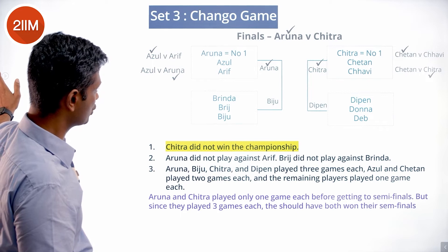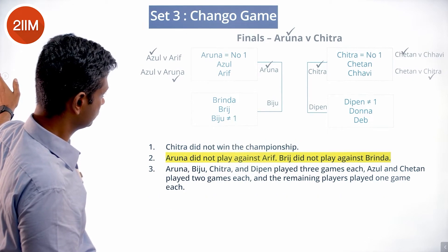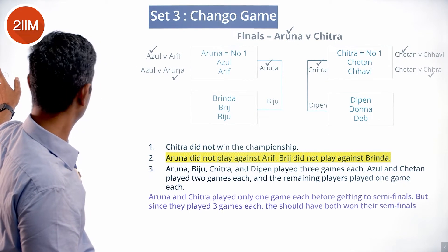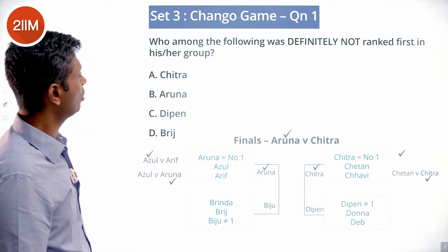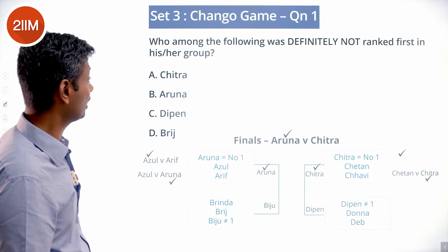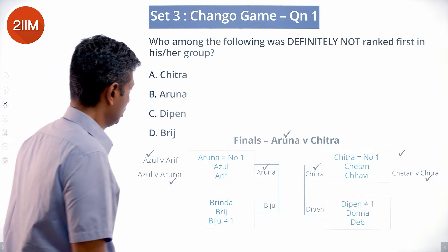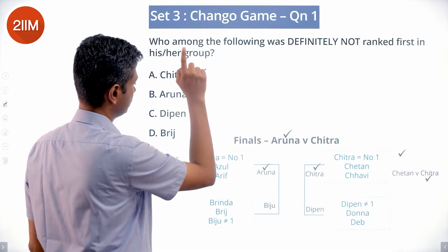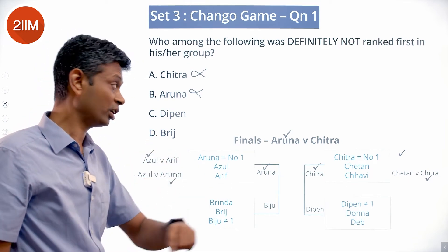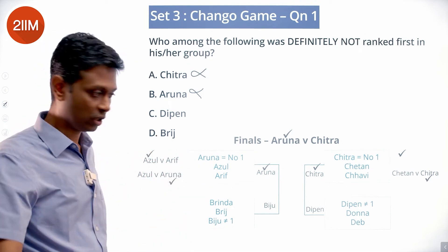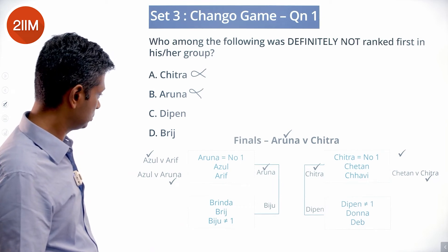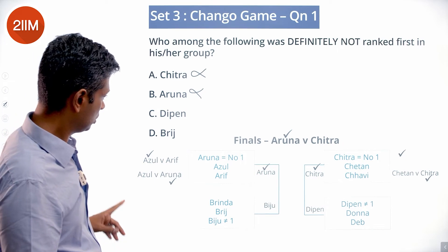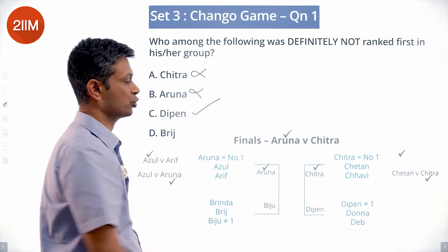The final was between Aruna and Chitra, and Aruna won. For the question 'who among the following is definitely not ranked first in their group?' — Aruna was ranked first, Chitra was ranked first, but Dipen was not ranked first. Bridge could have been first; we don't know. The answer is Dipen.